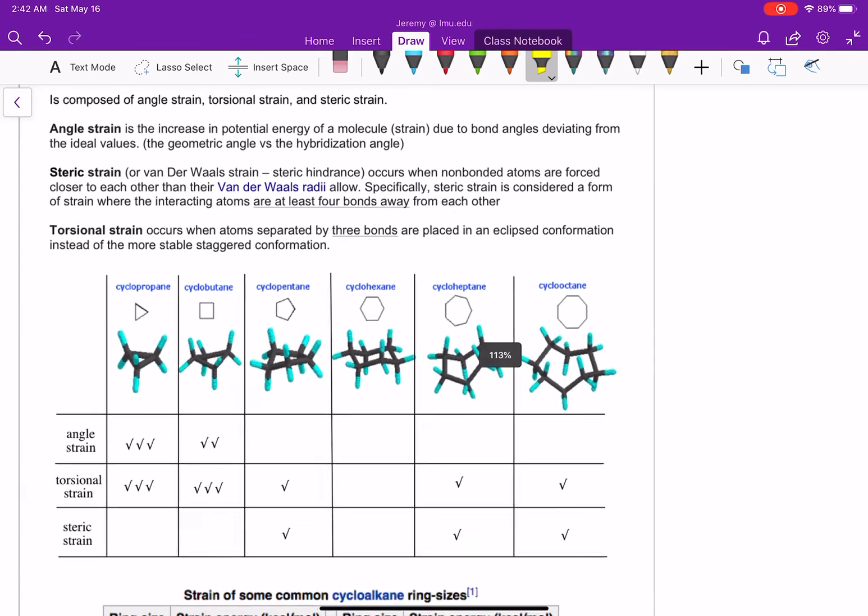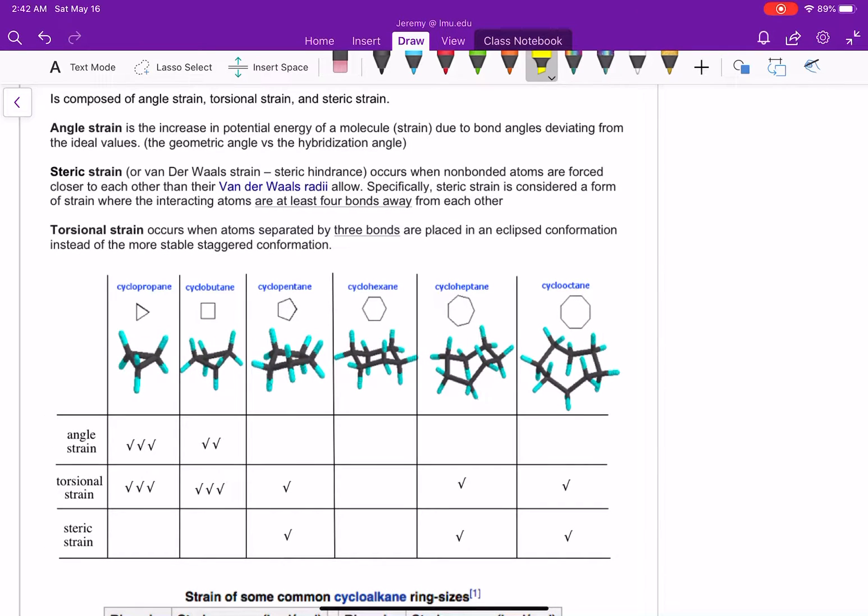So if we look at this PDF here, I just want to highlight the names of some different rings. We have cyclopropane, that's three carbons. Cyclobutane, four. Cyclopentane. Cyclohexane, six. Heptane, seven. Octane, eight, and obviously there's a lot more we can form.